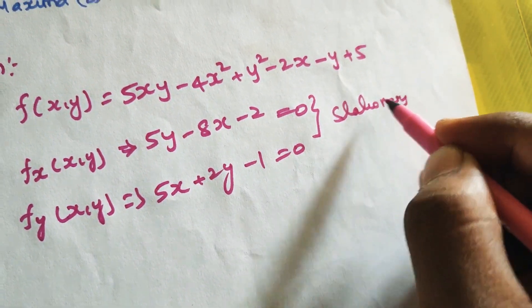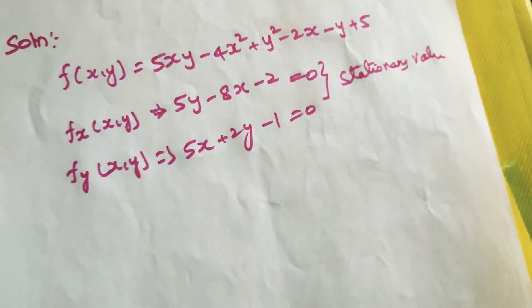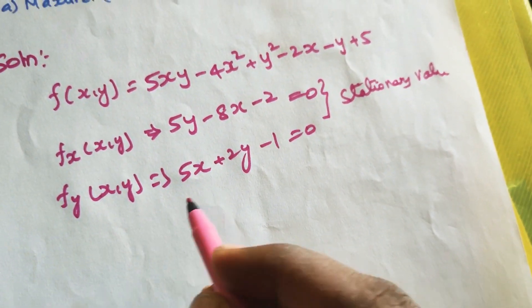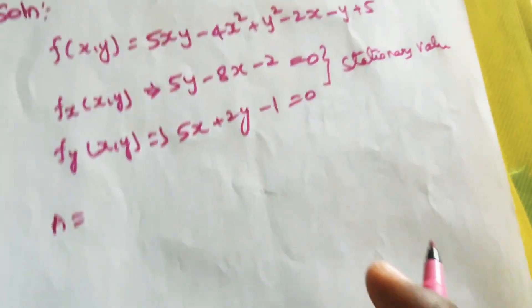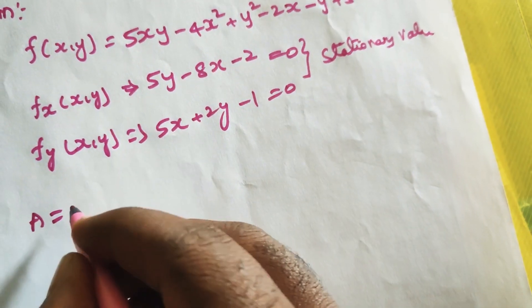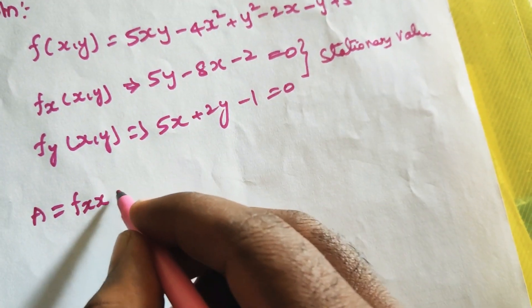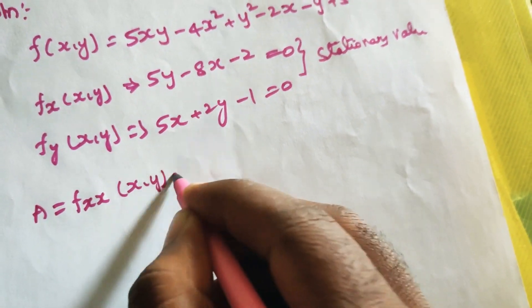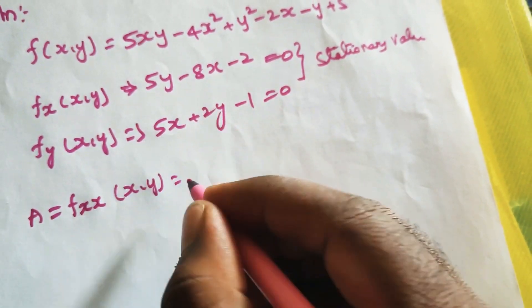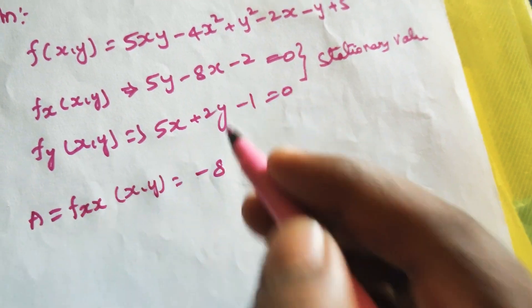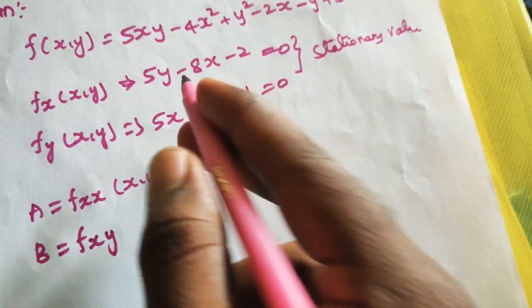Stationary value or extreme value. Now we go into the box to find A, B, C. A = fxx(x,y): differentiate fx with respect to x, that gives -8.